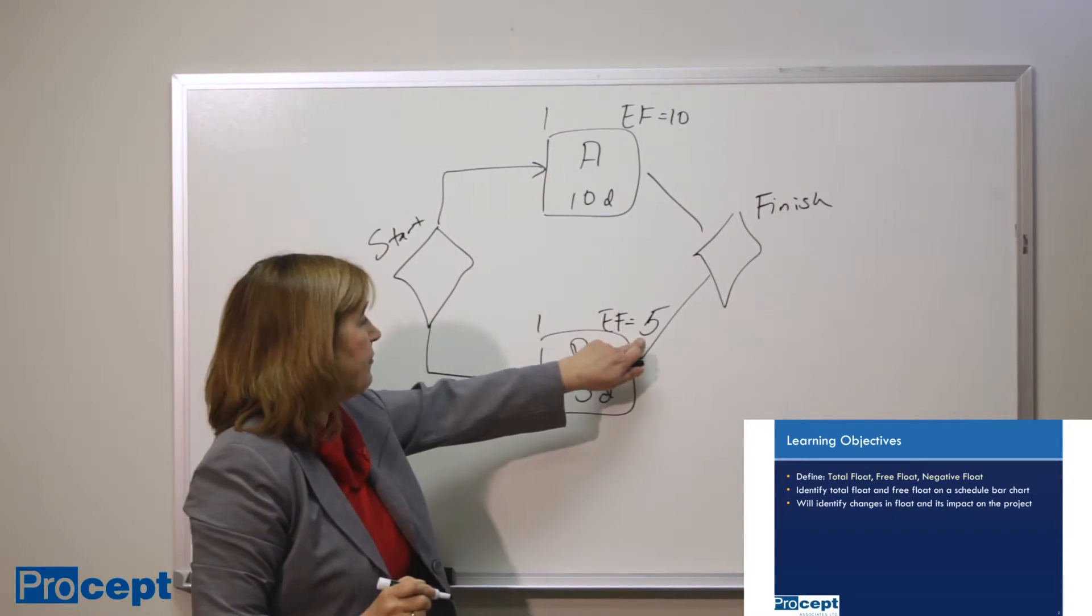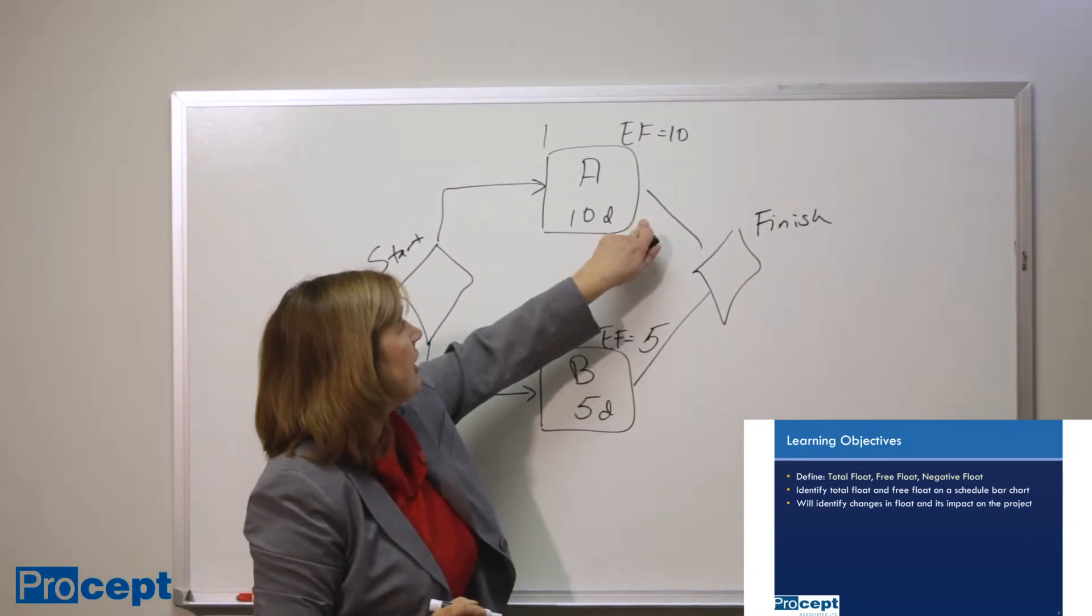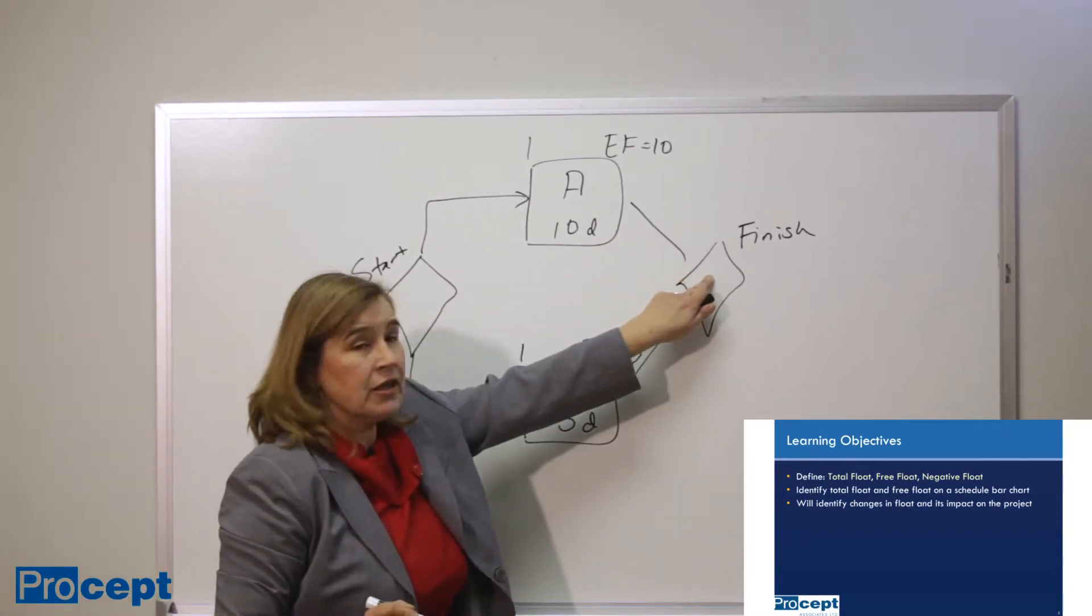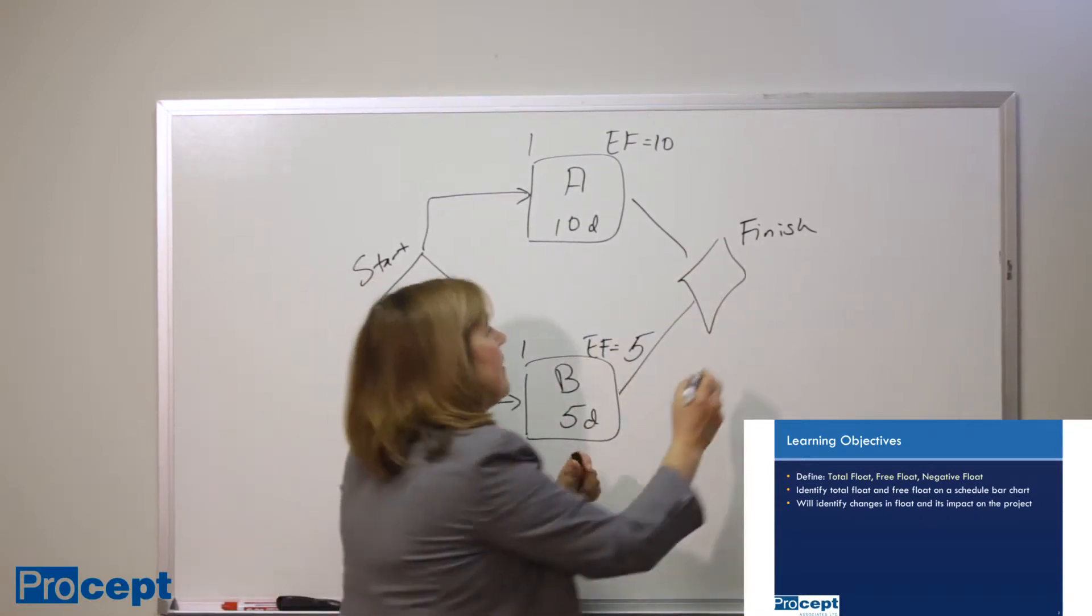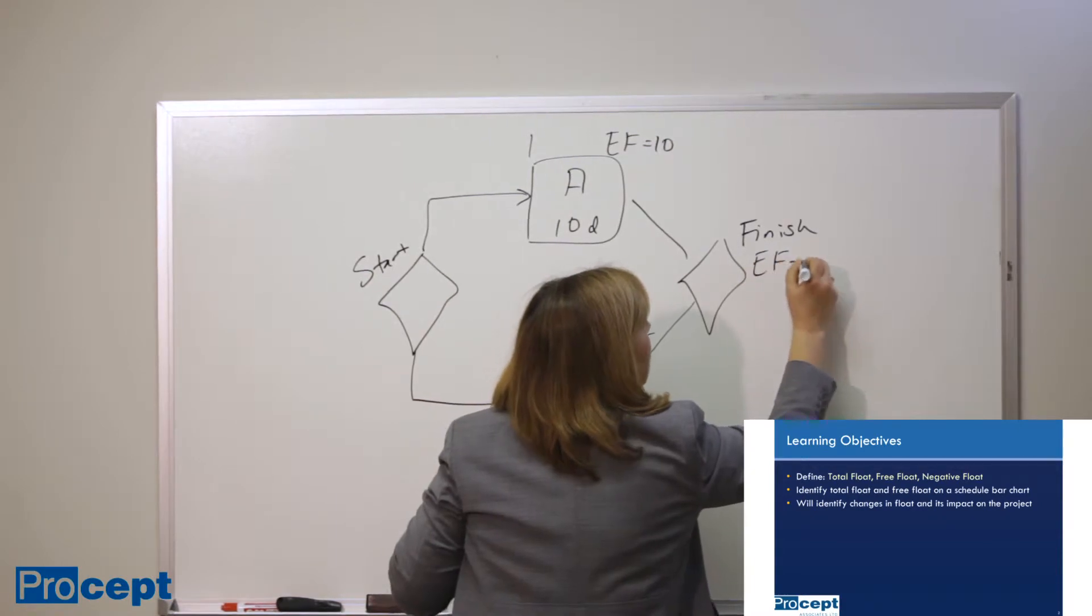So the earliest possible finish time for B is 5, earliest possible finish time for A is 10. The earliest time that this little project can finish is of course day 10.